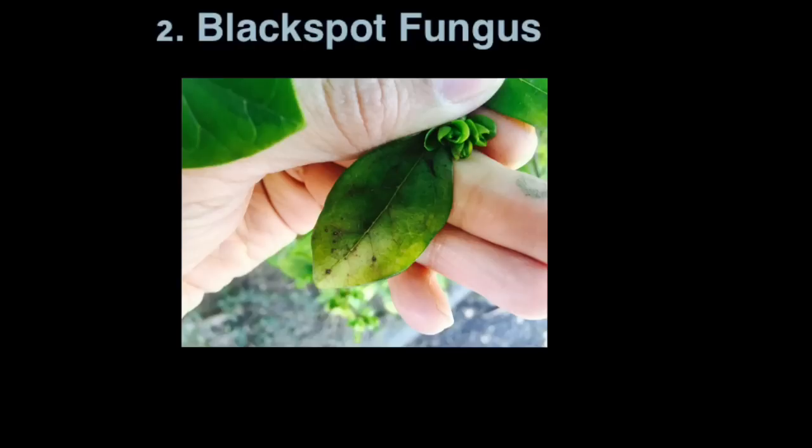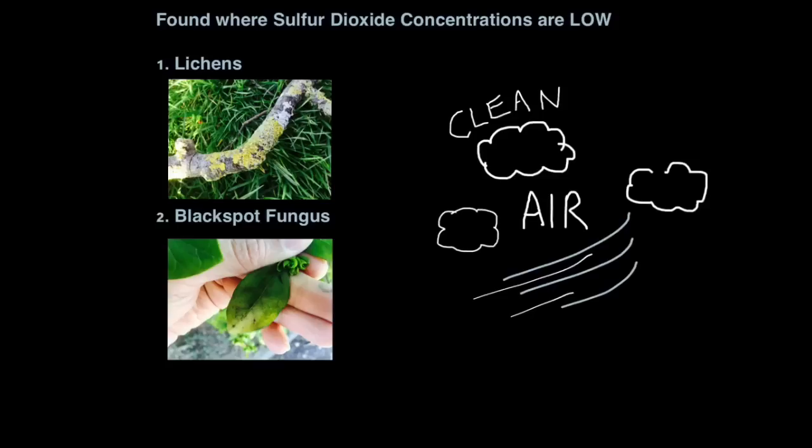The second indicator species for clean air is black spot fungus. You can see these tiny spots on this leaf here. That's actually a fungus. And while it's not nice for the plant because it has an infection, it is good for environment. It was a good indicator for a healthy environment. Black spot fungus is also very sensitive to sulfur dioxide levels. High concentrations will cause it to die. So lichens and black spot fungi are good indicators of clean air because they show where sulfur dioxide concentrations are low. You just have to learn the names.